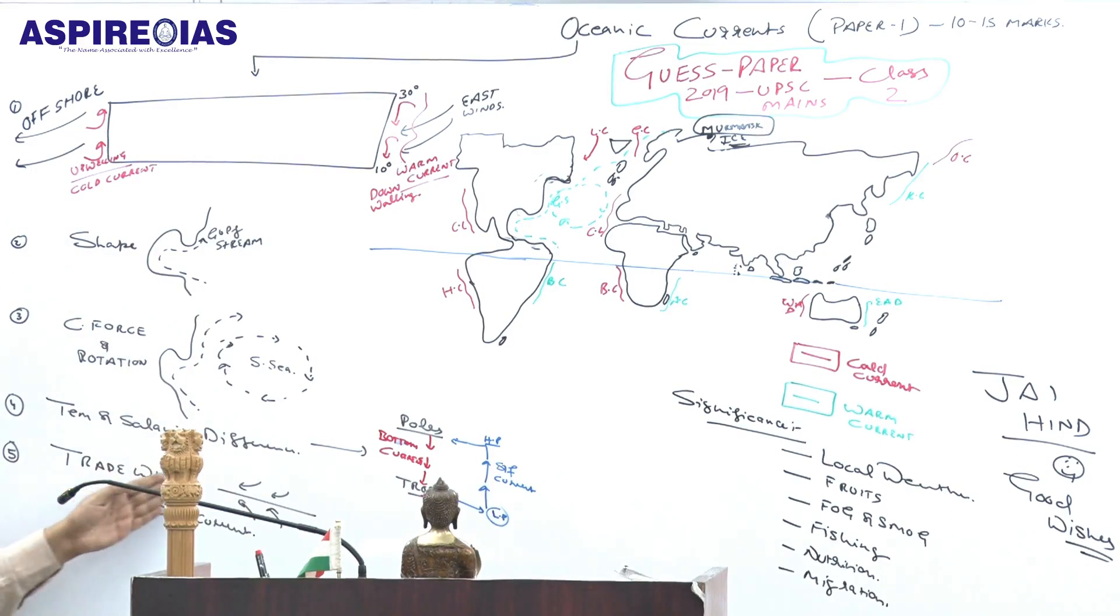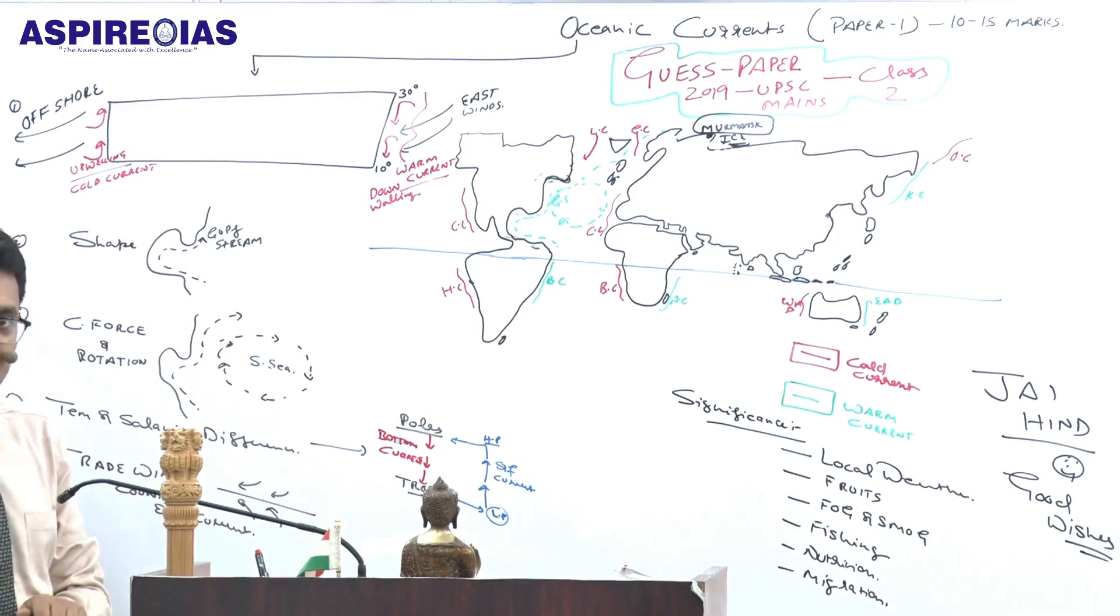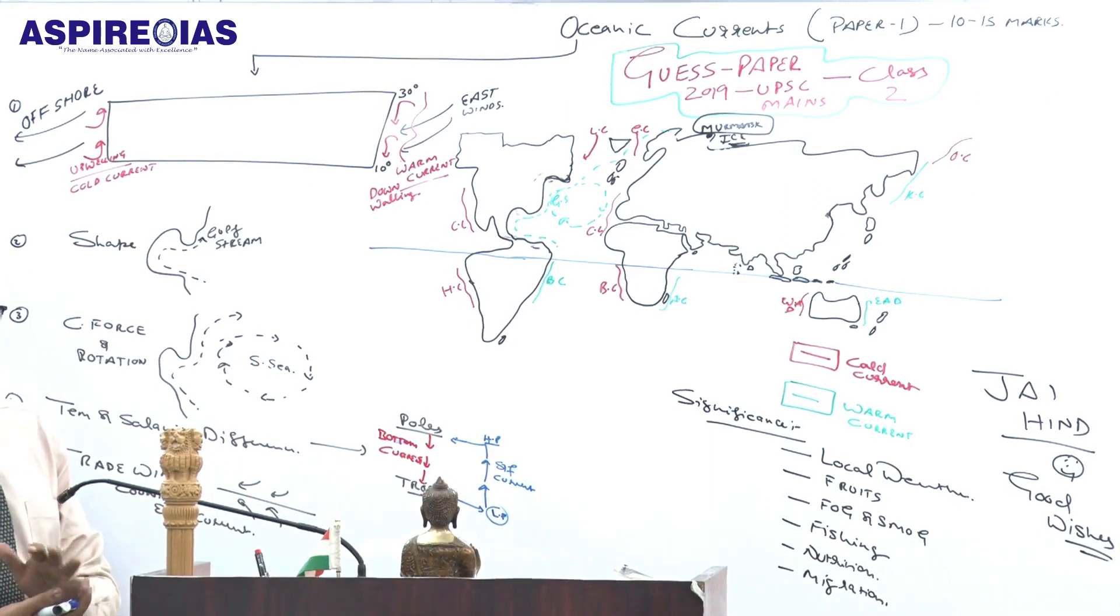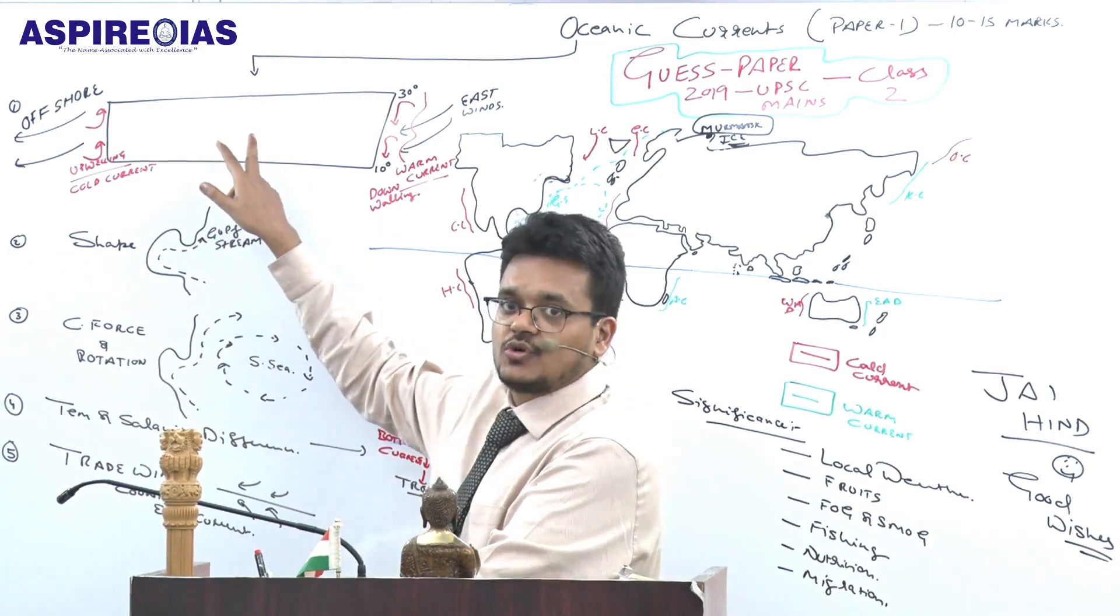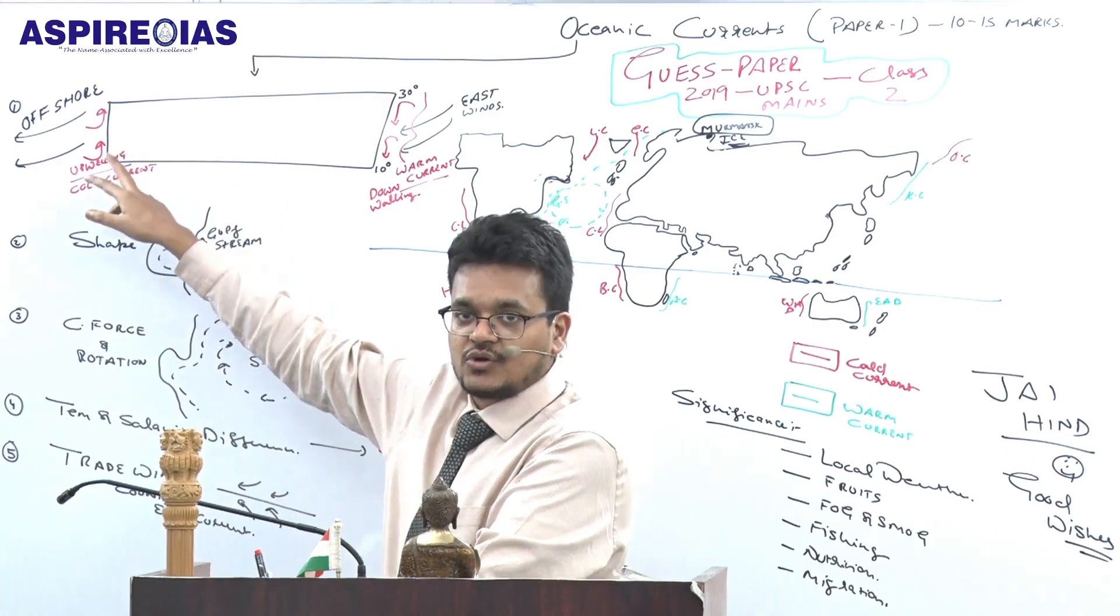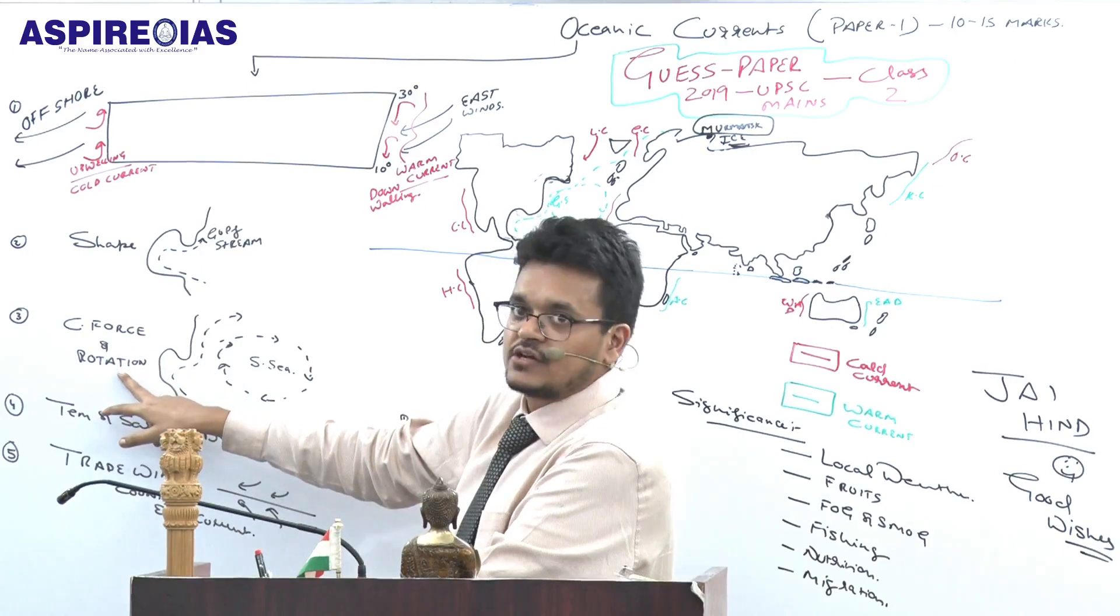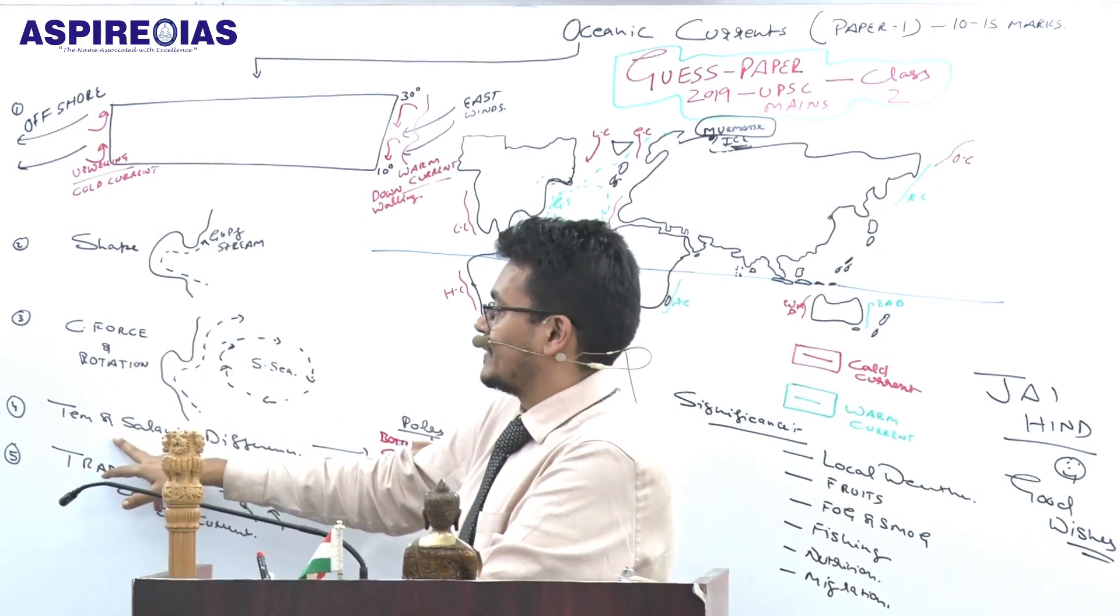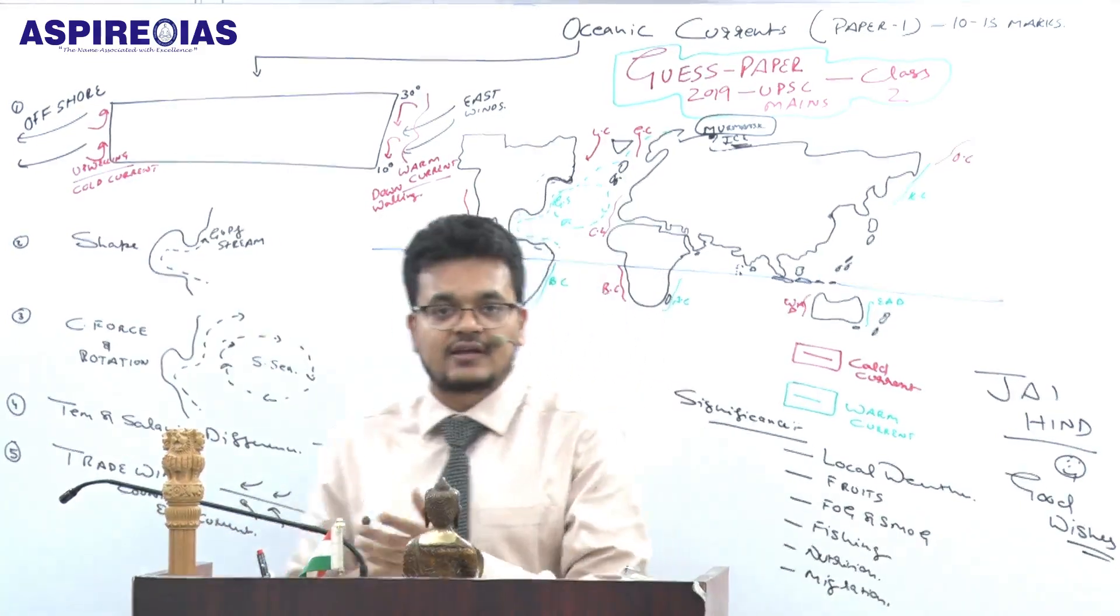The last factor is trade winds which are converging over the equator, resulting in counter equatorial currents. So let's revise: oceanic currents are the result of offshore and onshore winds, shape of the continent, Coriolis force and rotation, temperature and salinity difference, and trade winds with counter equatorial currents.